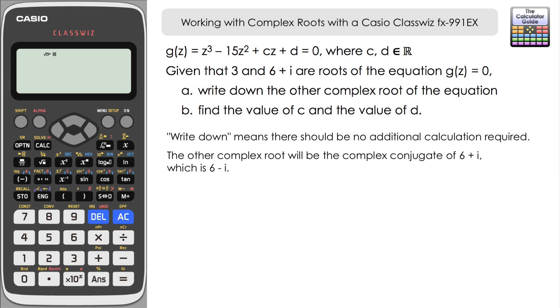So fairly straightforward — no extra working out. We just need to recognise that it's the complex conjugate that gives us that second complex root. We now have all three roots of the equation: 3, 6 plus i, and 6 minus i.